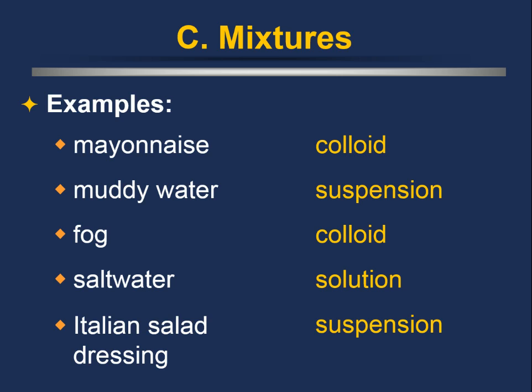You have a couple of assignments to complete based on this section: section review questions and your vocabulary list, with due dates established in class. Your objectives from this video lecture and the reading are: distinguish between physical and chemical properties of matter, classify changes of matter as physical or chemical, explain the gas, liquid, and solid states in terms of particles, and distinguish between a mixture and a pure substance. Write down any questions you have so you can bring them up in class.